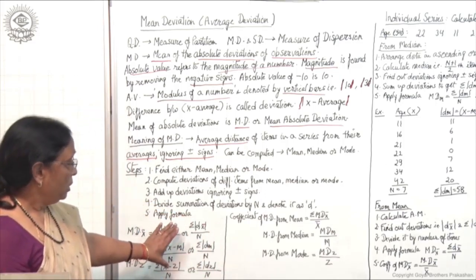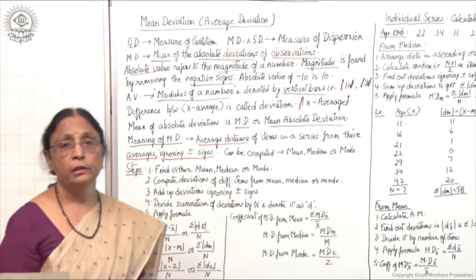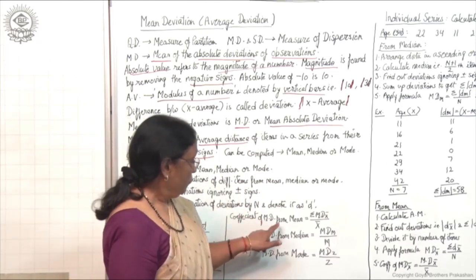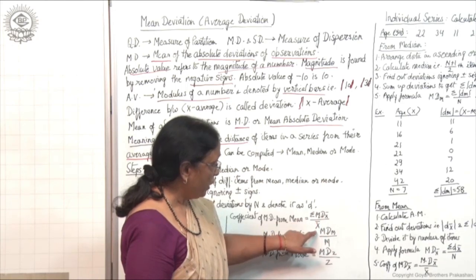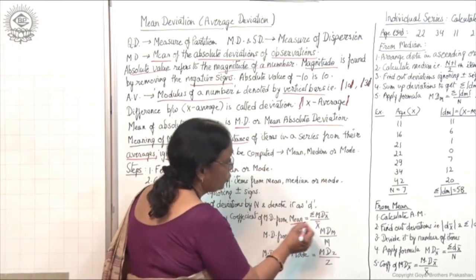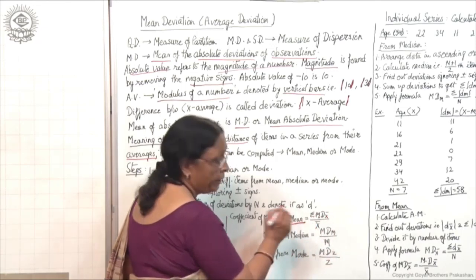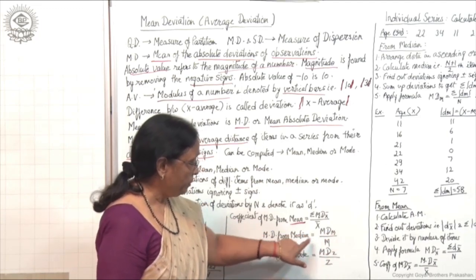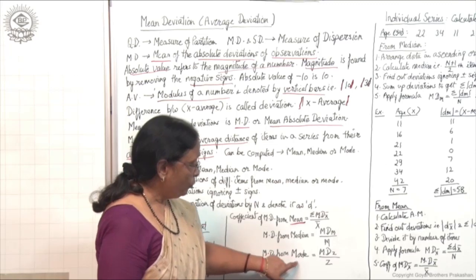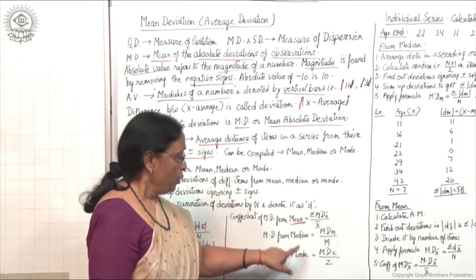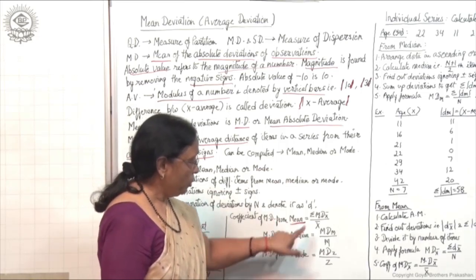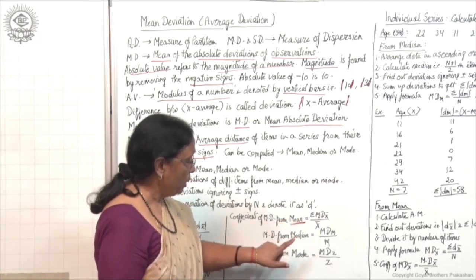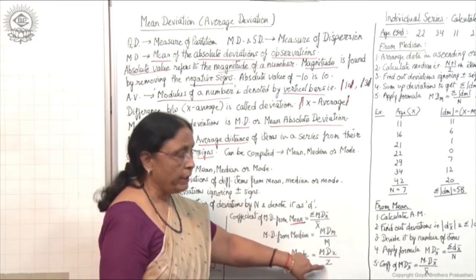The coefficient of mean deviation is a relative measure. From mean: MD(x̄) / x̄. From median: MD(M) / M. From mode: MD(Z) / Z. Whatever average you have selected, apply the corresponding formula. You do not have to apply all three formulas.